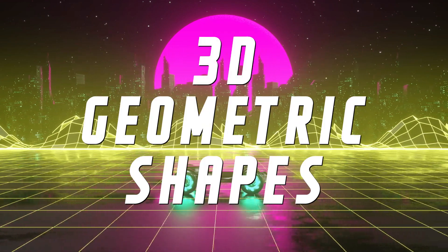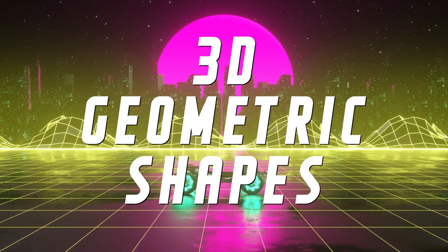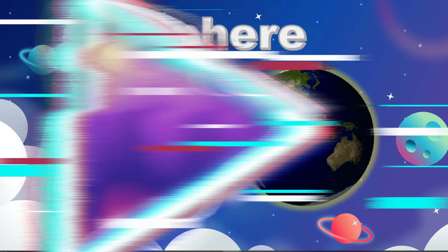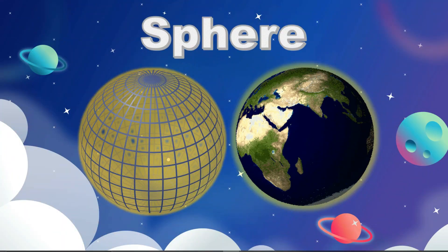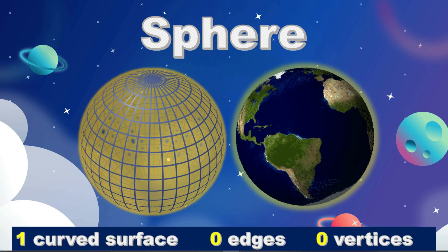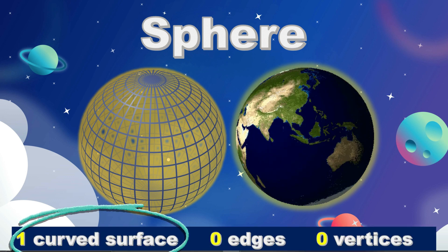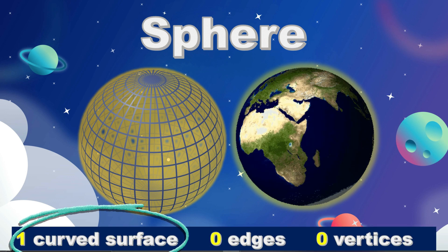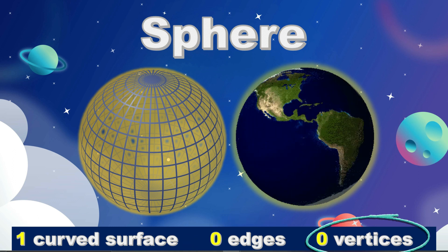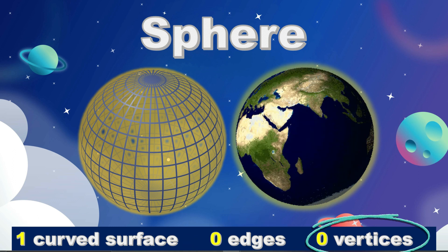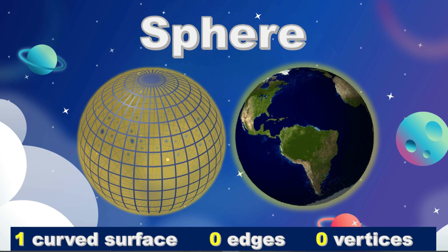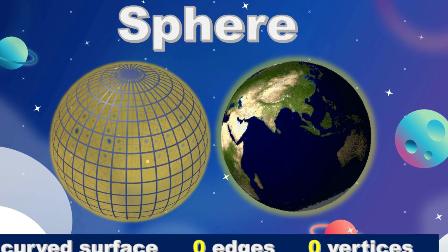Let's Learn 3D Shapes! Sphere. Sphere has one curved surface, no edges, no vertices. An example of Sphere is our planet Earth.